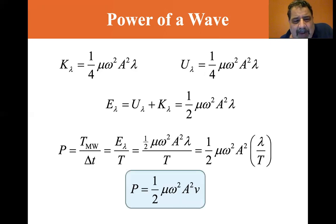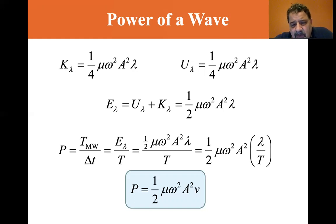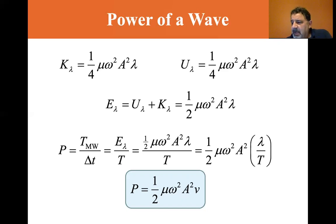Power is the energy transferred by the mechanical wave divided by the period: P equals E_λ divided by T, which equals one-half μ ω² A² λ divided by T. Since λ/T equals the wave speed v, the power equals one-half μ ω² A² v. This shows that the rate of energy transfer by a sinusoidal wave on a string is proportional to the square of the frequency (since ω = 2πf), the square of the amplitude, and the wave speed.